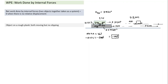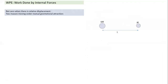Why is it not zero? Forces are equal and opposite, but displacements are not equal. So unequal displacement leads to non-zero net work done by internal forces. Now let's take an example of a conservative internal force — gravitational attraction between two masses.